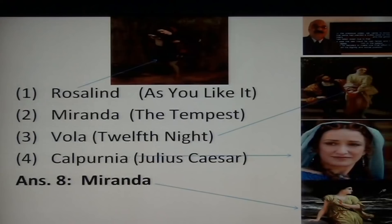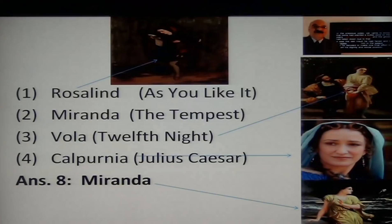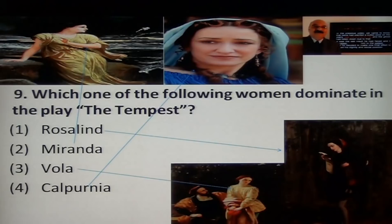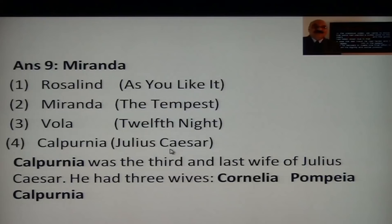You can see pictures: Rosalind from As You Like It, Miranda from The Tempest, and Calphurnia — Julius Caesar's wife. Julius Caesar had three wives, and Viola is also shown. Calphurnia was the third and last wife of Julius Caesar; his three wives were Cornelia, Pompeia, and Calphurnia. The answer is Miranda.